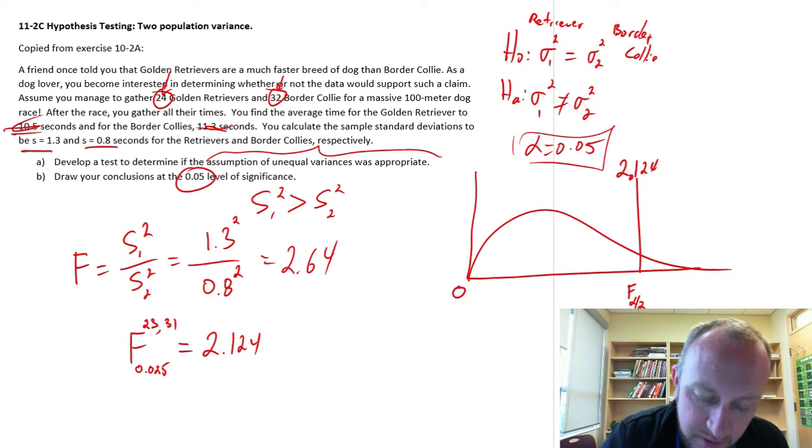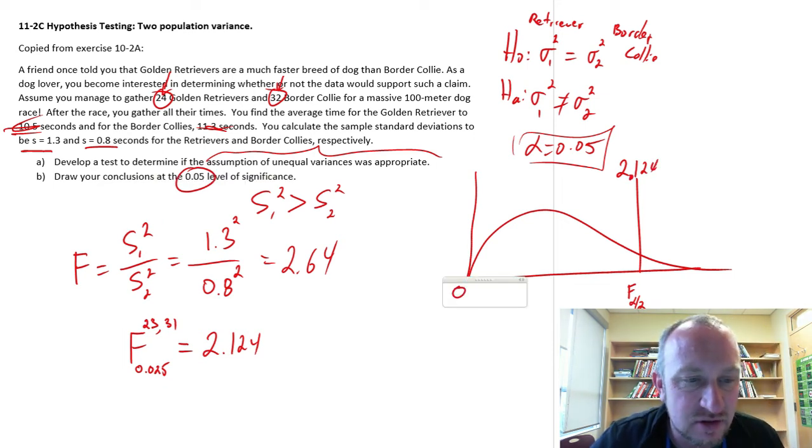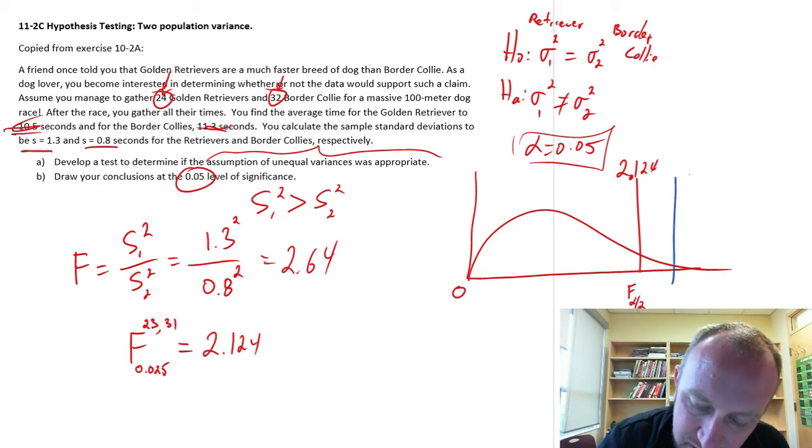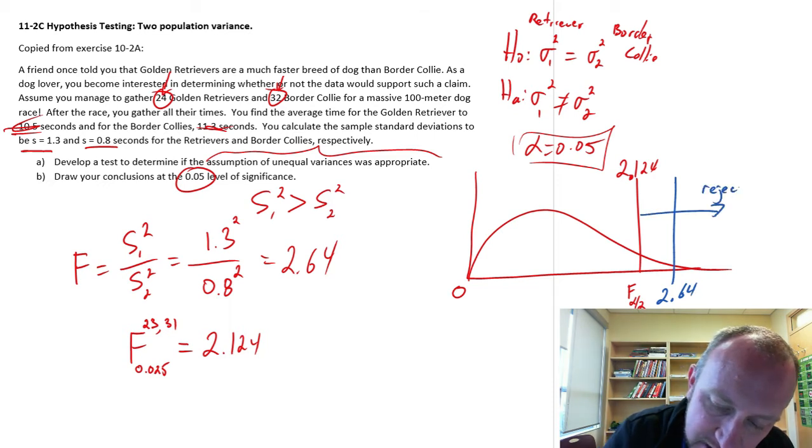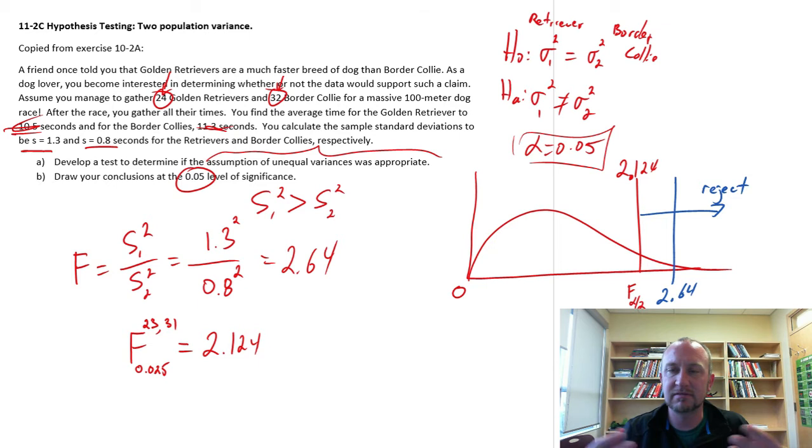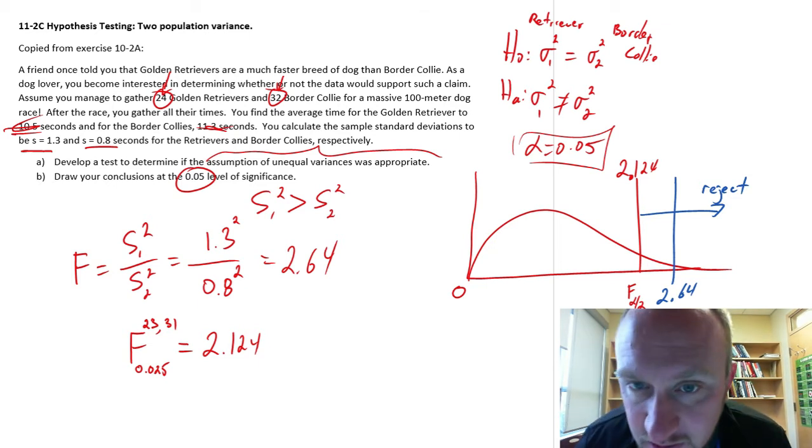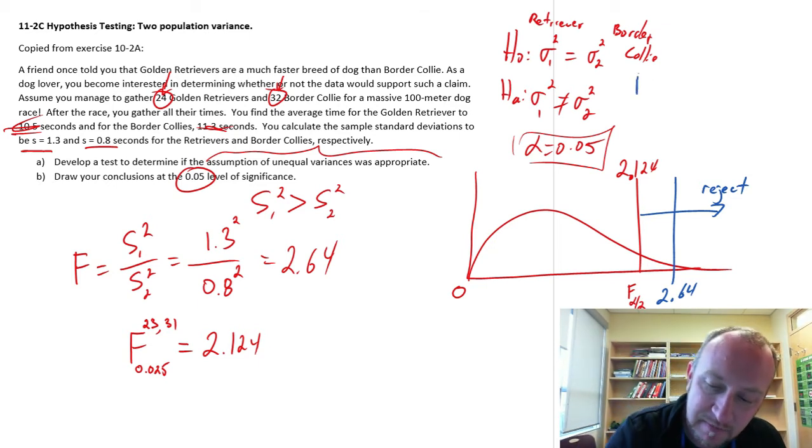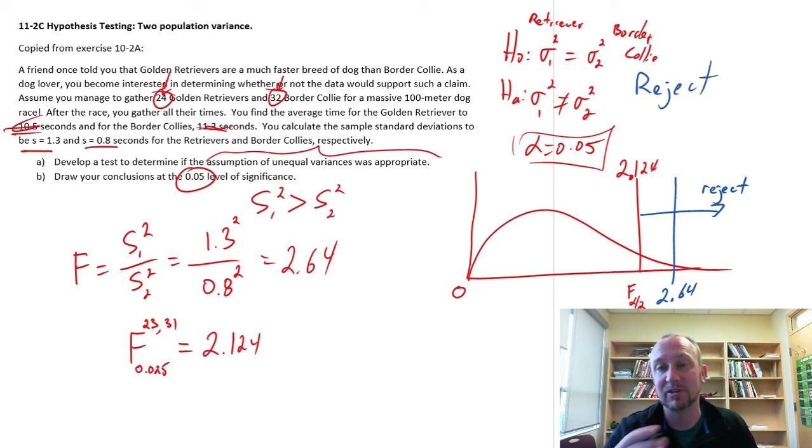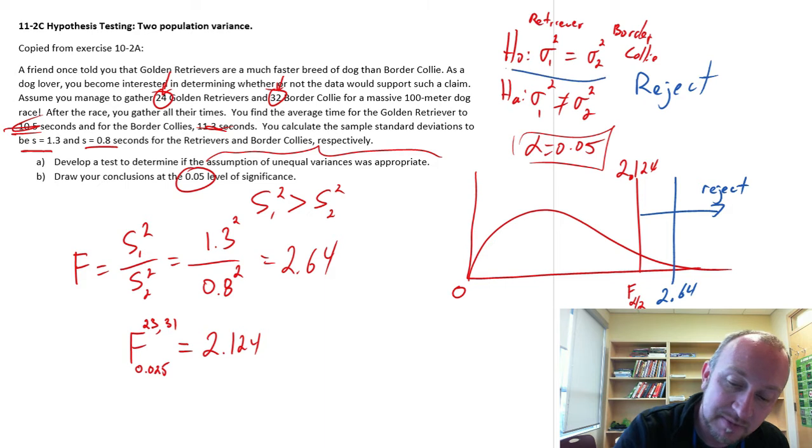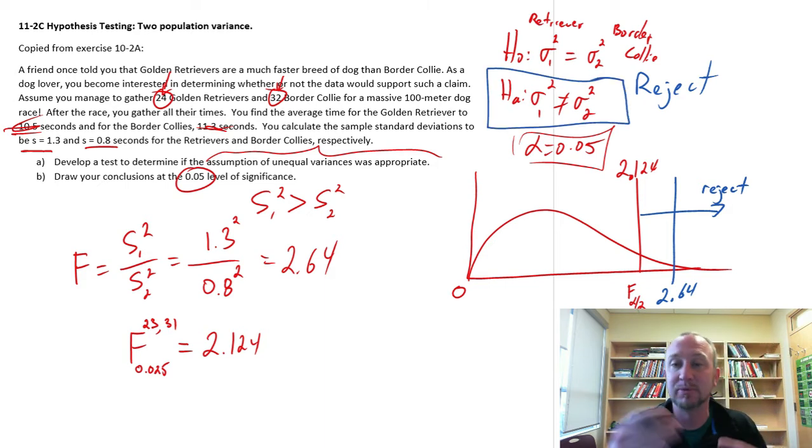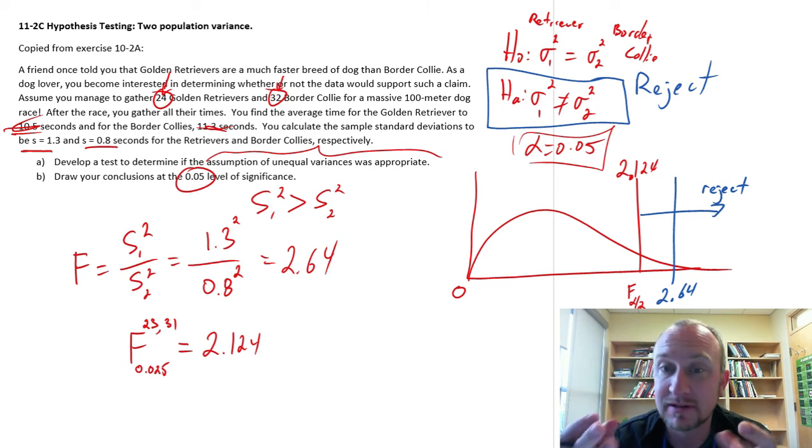So looking at that F distribution, whatever its shape is, here I have my critical value. F alpha divided by 2 is 2.124. 0 is out here. Test statistic is 2.64. So that's somewhere way out here. 2.64. That is in my rejection space. So I can reject based on the critical value approach. I can reject this null. And I can say, yes, it was appropriate to assume unequal variance. Because now I have evidence that supports that assumption. That the variances do appear to be unequal.